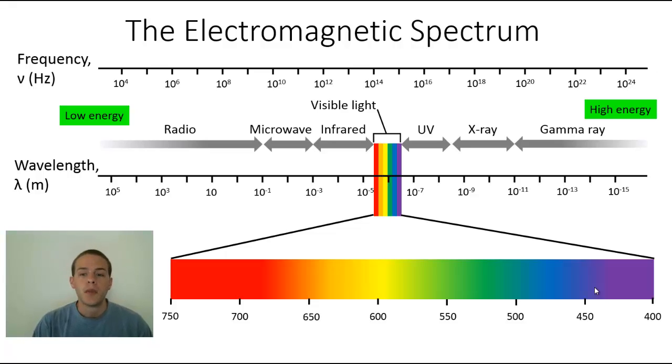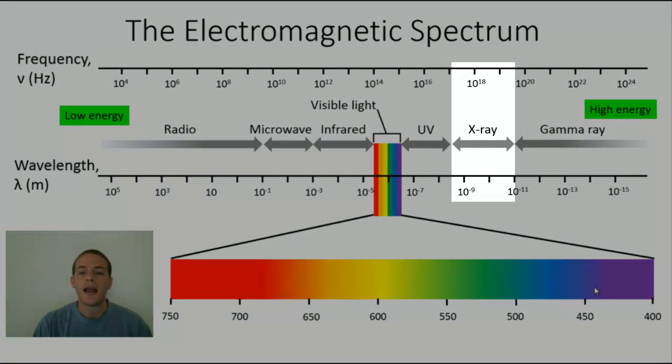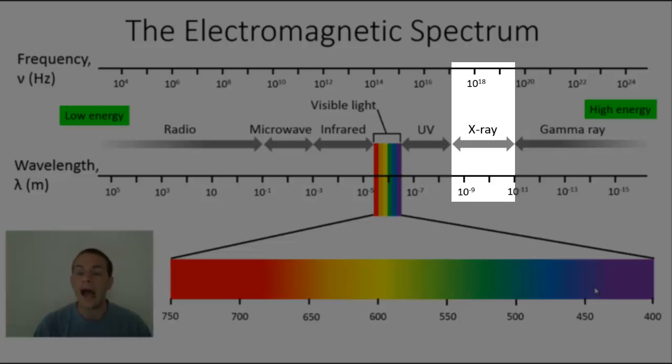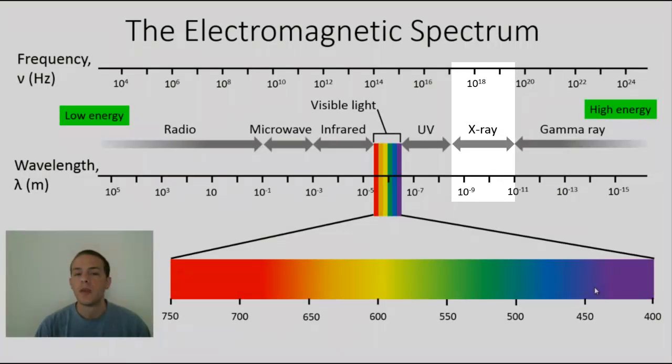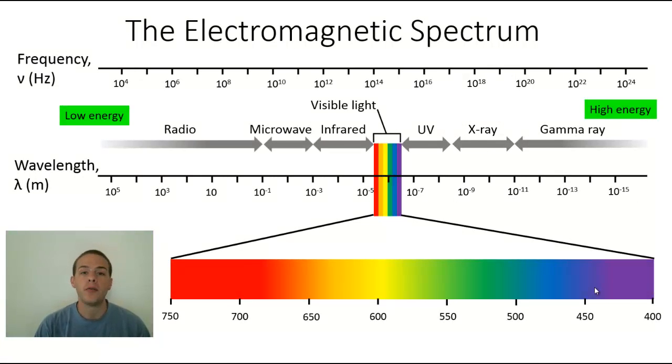After UV we've got x-rays, which are relatively high energy, high frequency, low wavelength types of waves. X-rays are so powerful they can penetrate through human skin, so they're used to image human bones. If you ever got an x-ray, that's the type of radiation we're dealing with.